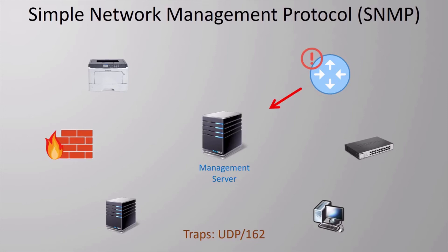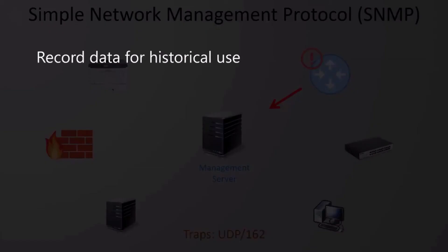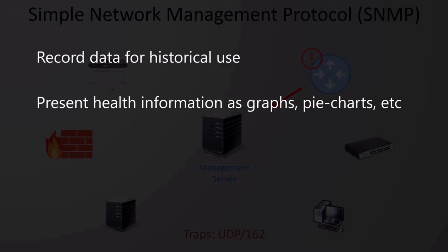Now that the server has this information, there are usually a few things it will do. It will record the information for historical use — for example, we might want to see what our peak time periods for internet usage are. It will also provide information to us in the form of graphs, charts, and so on, which might include the percentage of uptime across our network.